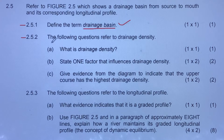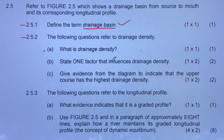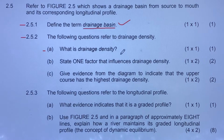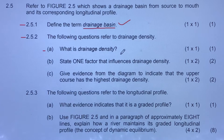Question 2.5.2a: What is drainage density? Drainage density is the total length of the river per kilometer squared. So a drainage basin can have either high drainage density or low drainage density.